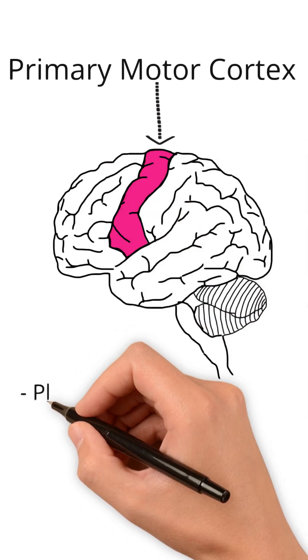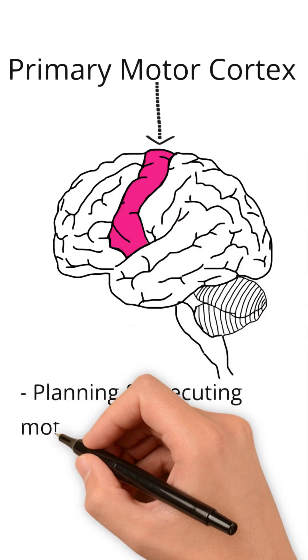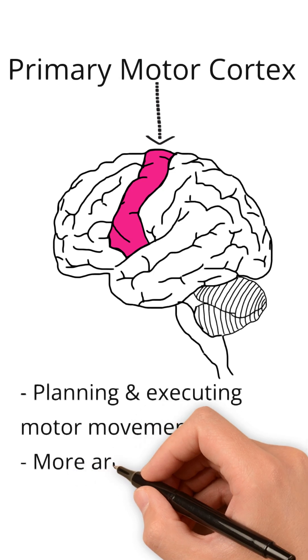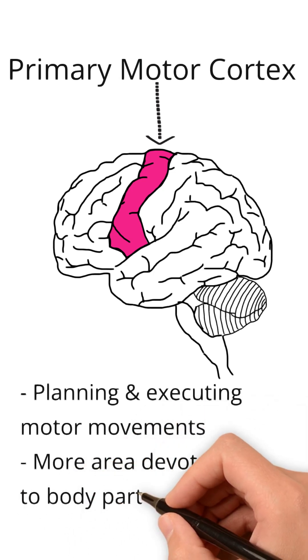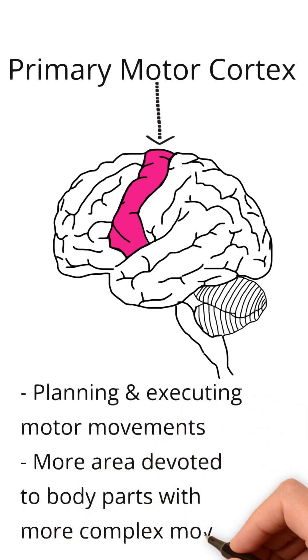This brain region is incredibly important for planning and executing voluntary motor movements. Body parts capable of more complicated movement patterns, such as the hands and face, have more area in this region devoted to them than parts with less complicated patterns, such as the legs and back.